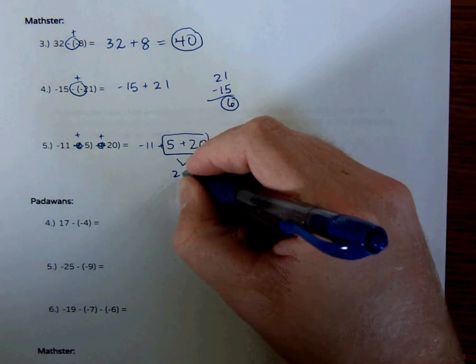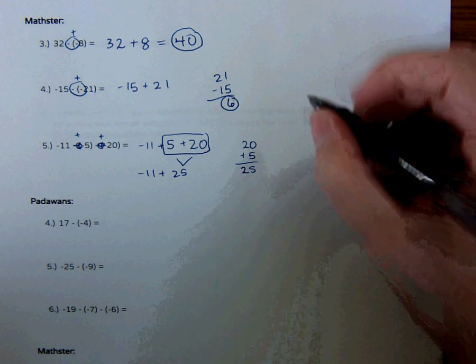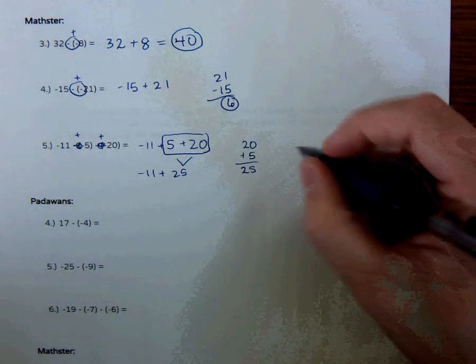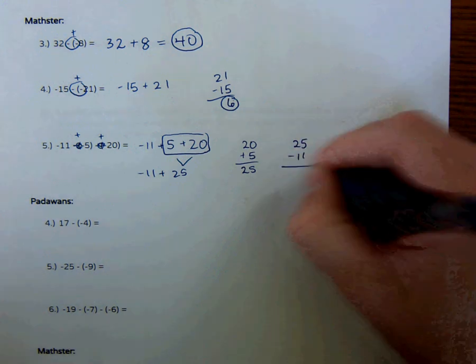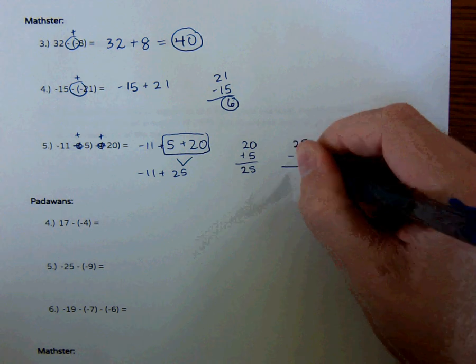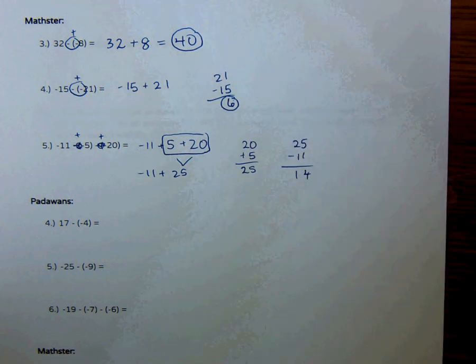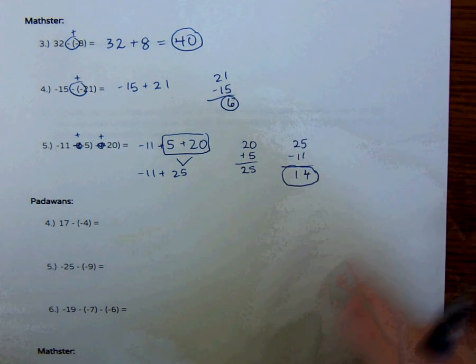So that's 25, so negative 11 plus 25. Those are different signs. Anytime I have different signs, I subtract. So 25 minus 11. 5 minus 1 is 4, 2 minus 1 is 1, is 14.